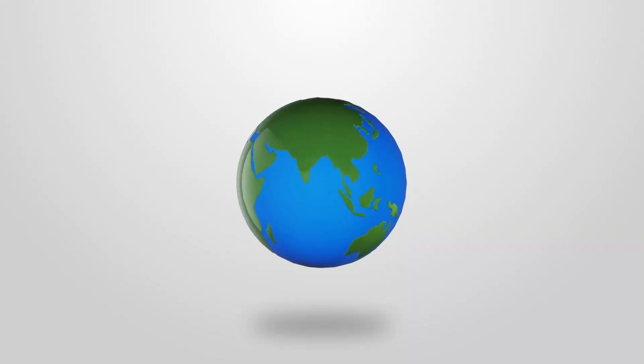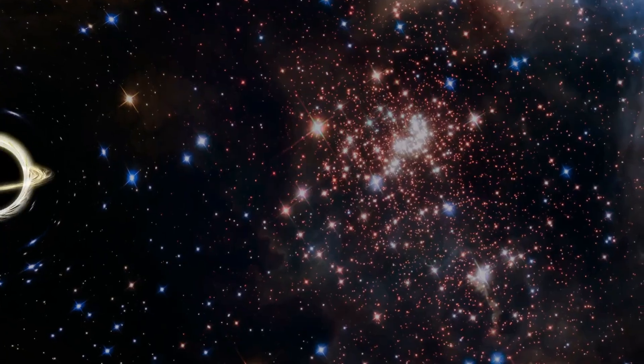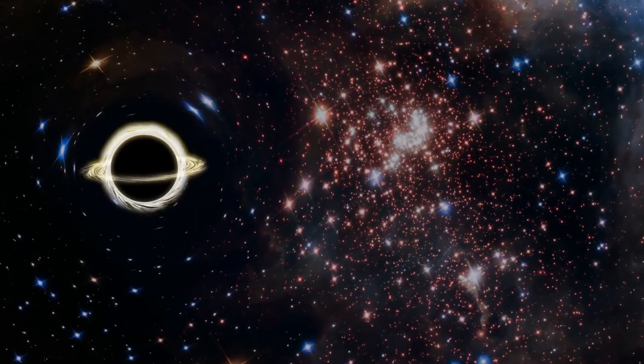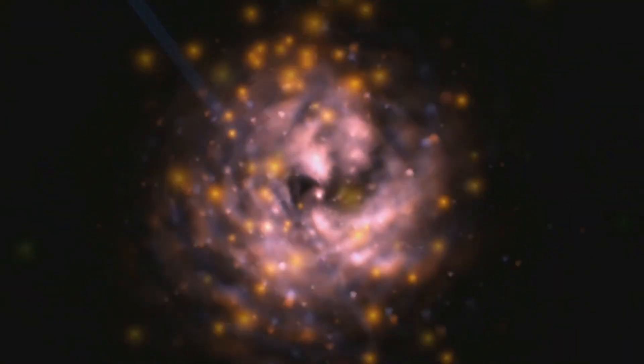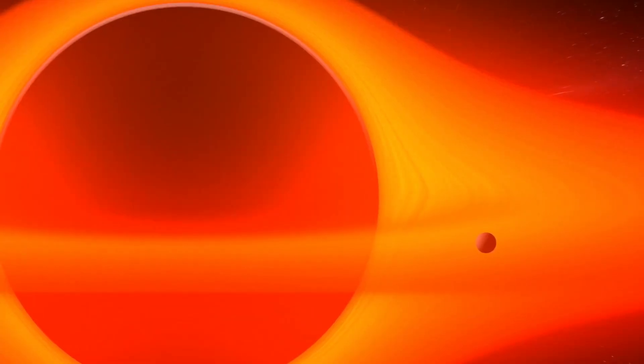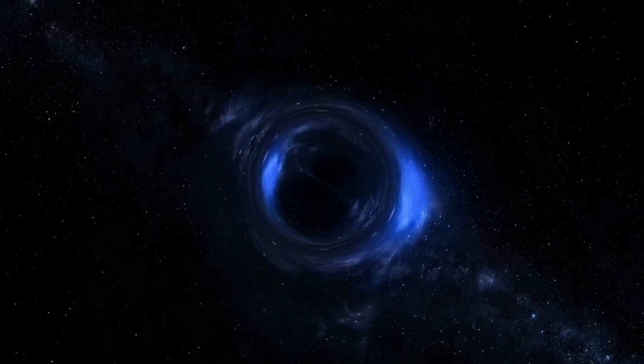To put this in perspective, the mass of Earth is approximately 5.97×10^24 kilograms. A primordial black hole with 10 times this mass, but the size of a bowling ball would have an incredibly high density. This extreme density is what allows such a small object to exert a significant gravitational force, enough to influence the orbits of objects in the Kuiper Belt.